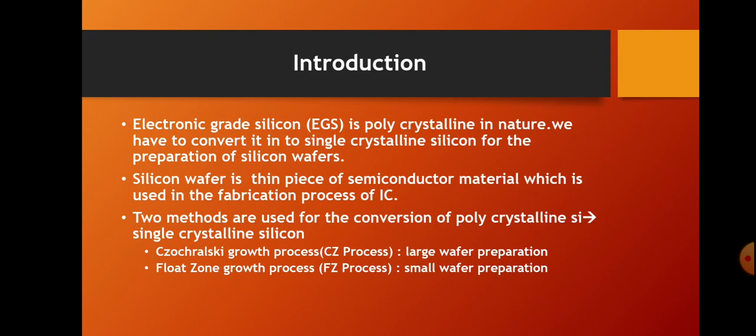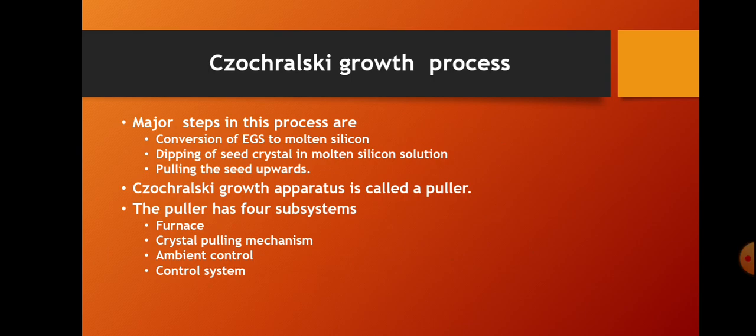In the CZ process, we prepare silicon ingots having a diameter of 300 mm to 400 mm. There are mainly three steps in this process. First, we convert electronic grade silicon into molten silicon by heating it to its melting point of 1412 degrees Celsius inside a crucible. That is the first step.